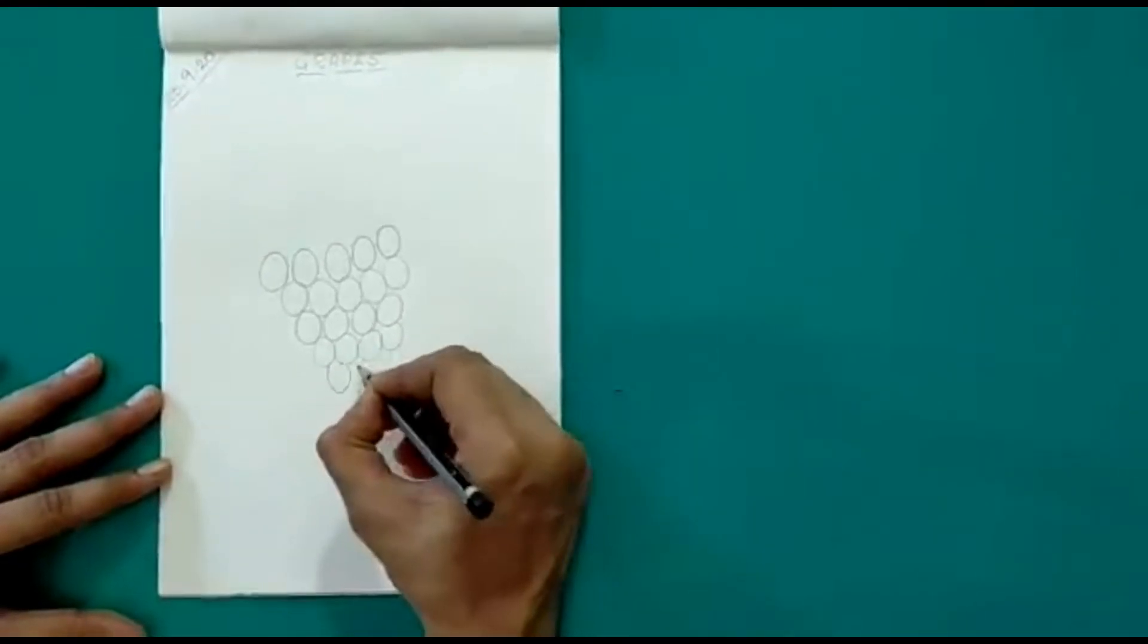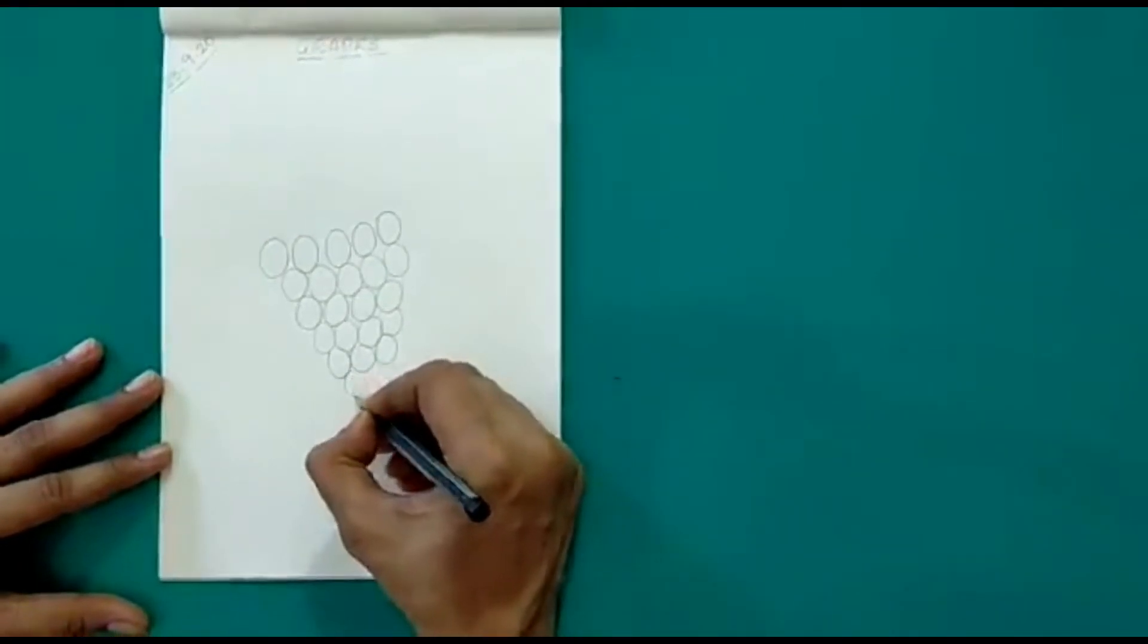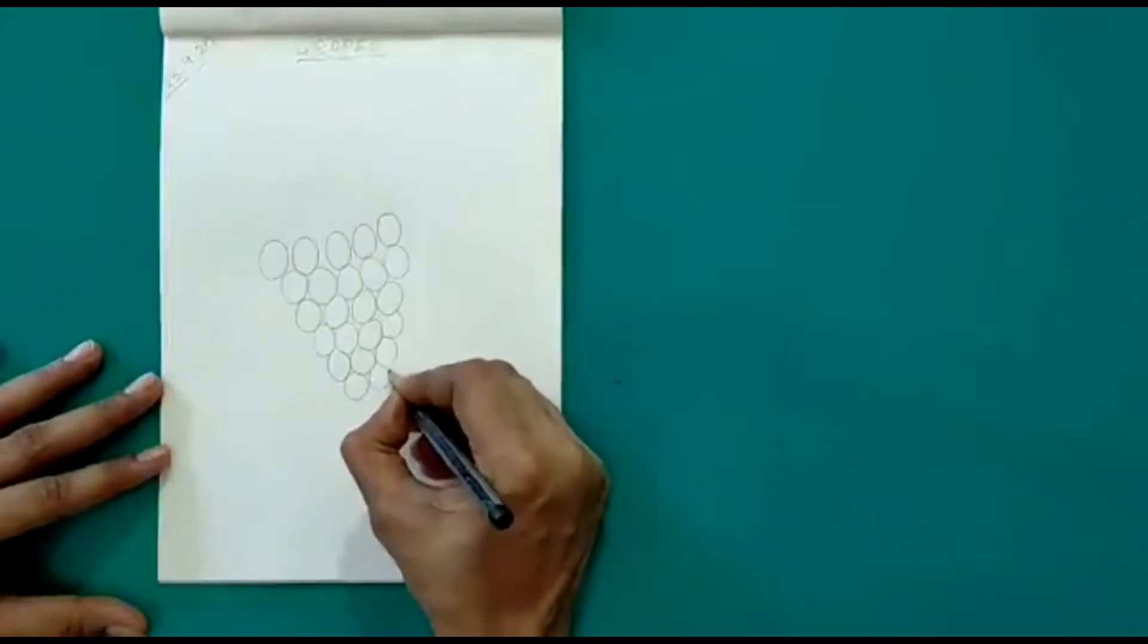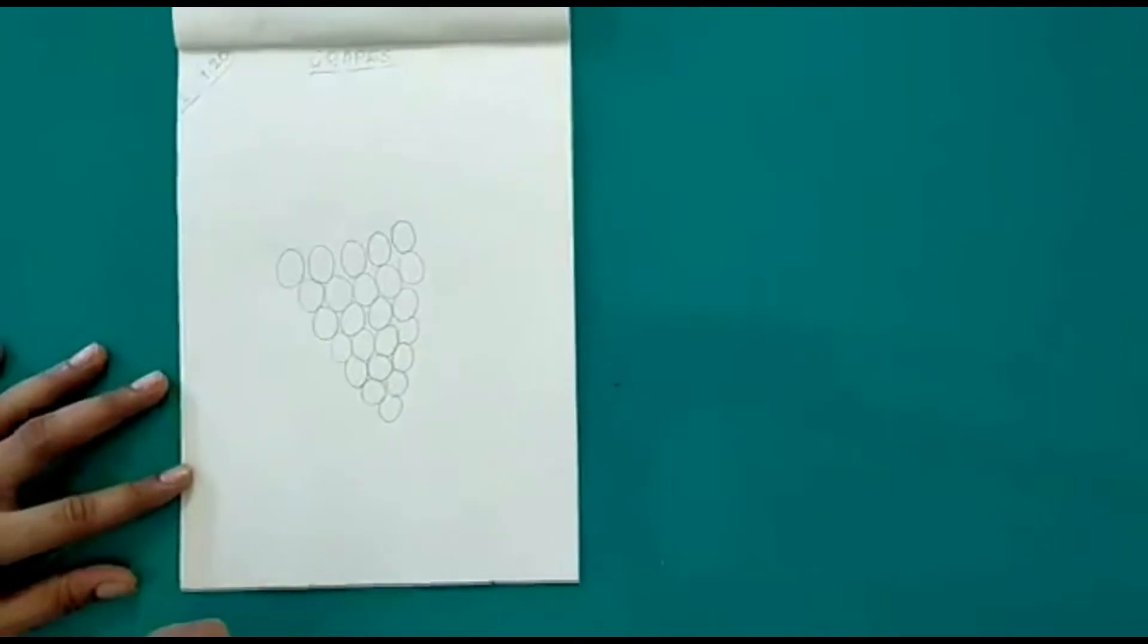Now 3 ovals below this. 2 here and 1 here. Okay.